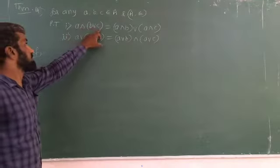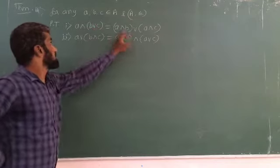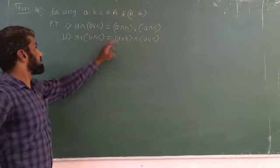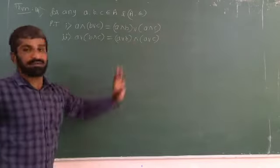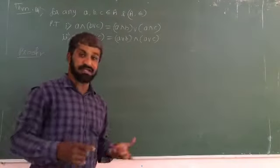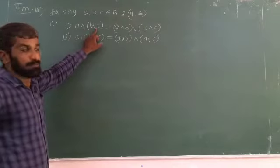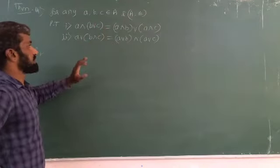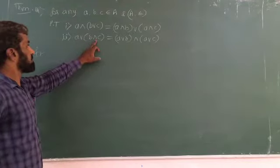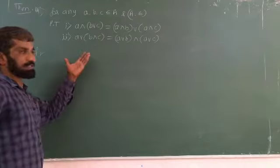A meet B joint C is equal to A meet B, join A meet C. This is what we need to prove. We need to show that meet operation distributes over joint operation and joint operation distributes over meet operation, by using the distributive laws. This is the concept of this theorem.